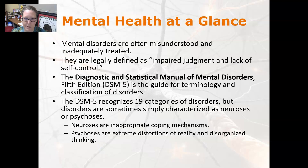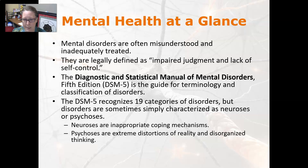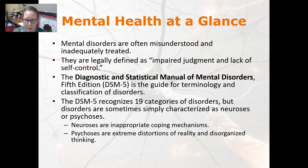Mental health at a glance: mental disorders are often misunderstood and inadequately treated. In the U.S. especially, there is also a lack of coverage and lack of access. They are legally defined as impaired judgment and lack of self-control. The Diagnostic and Statistical Manual of Mental Disorders, Fifth Edition — also known as the DSM-5 — is a guide for the terminology and classification of disorders. The DSM-5 recognizes 19 categories of disorders, but disorders are sometimes simply characterized as neuroses or psychoses. Neuroses are inappropriate coping mechanisms.